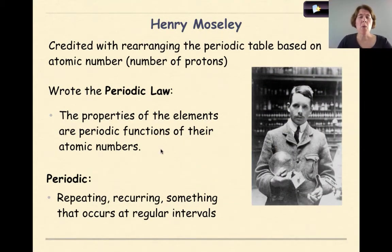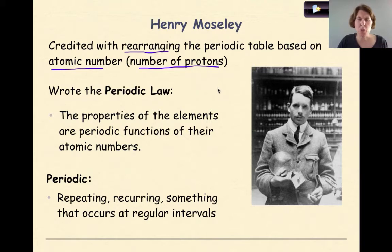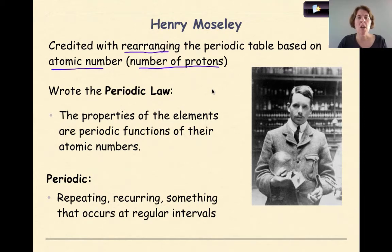Then we have Henry Moseley. What Moseley did was rearrange the periodic table based on atomic number, which we know is the number of protons. Because when we think about carbon-12 and carbon-14, they're both carbon and both have six protons, but carbon-12 has six neutrons while carbon-14 has eight neutrons. Moseley said the one thing that's constant from element to element is the number of protons in the atom, so let's base the periodic table on the subatomic particle of protons.